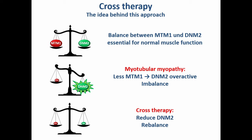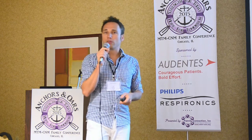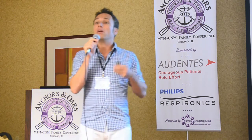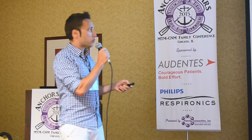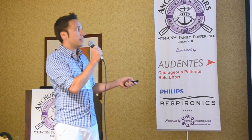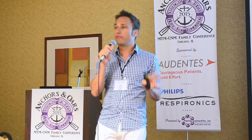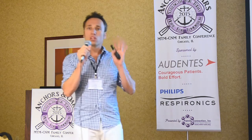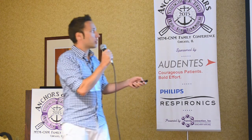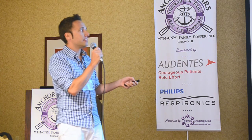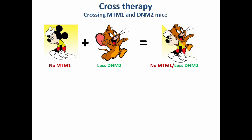Here's how we did this in mice. We had the mouse model for myotubular myopathy and crossed it with another mouse that has only half of Dynamin-2 — those mice are doing absolutely fine, so it seems okay to have only 50% of Dynamin-2. We crossed these mice and obtained mice that have no Myotubularin, just like patients with myotubular myopathy, and only half of Dynamin-2.